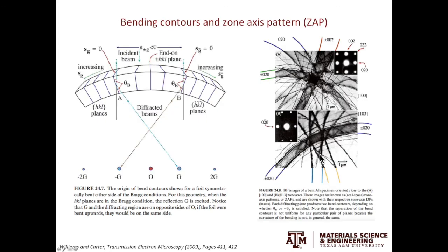Next we will discuss the bending contours. In the Williams and Carter book, the authors said the bending contours are annoying but useful. Assume most of the specimens have large excitation error. Therefore, the intensity of the direct beam is high. So in the bright-field TEM image, the specimen will appear to be bright.